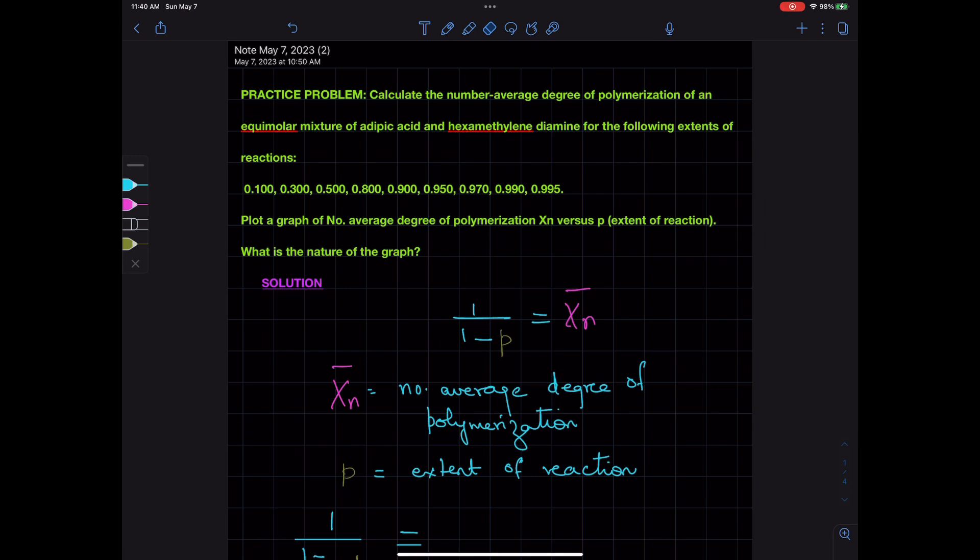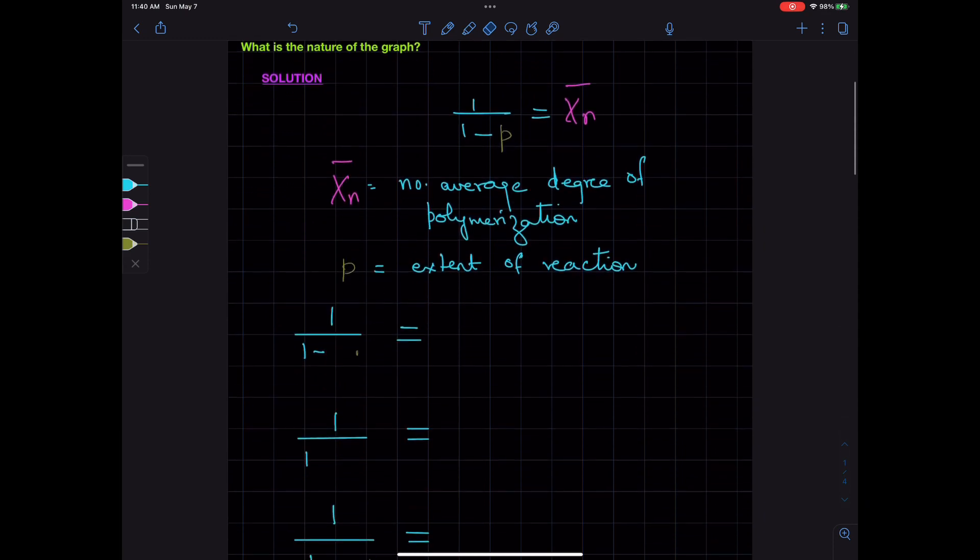Plot a graph of number average degree of polymerization, Xn versus P. What is the nature of the graph? We start off by first writing the formula 1 over 1 minus P equals Xn, where Xn is the number average degree of polymerization and P is the extent of reaction.